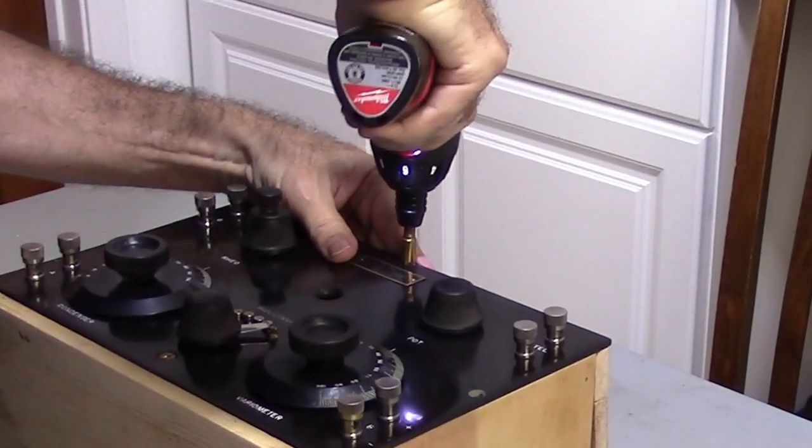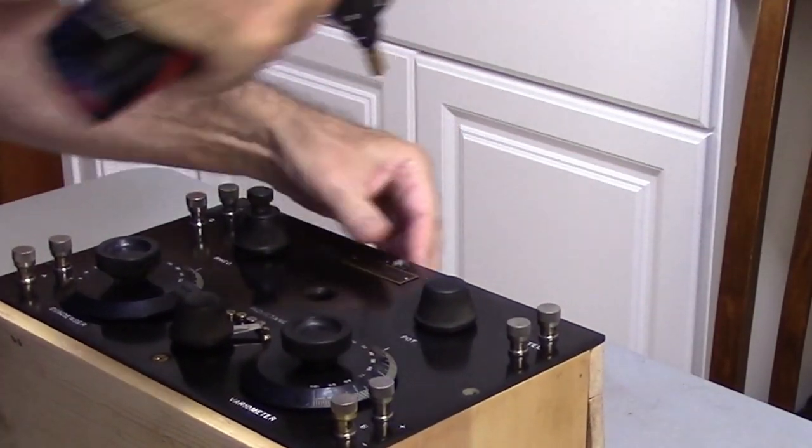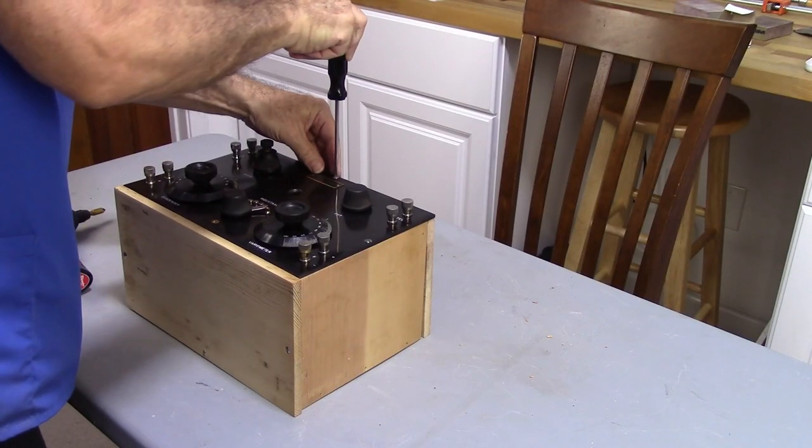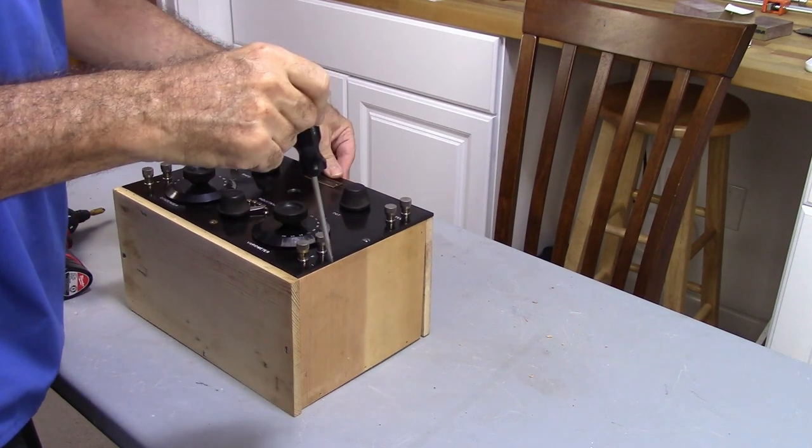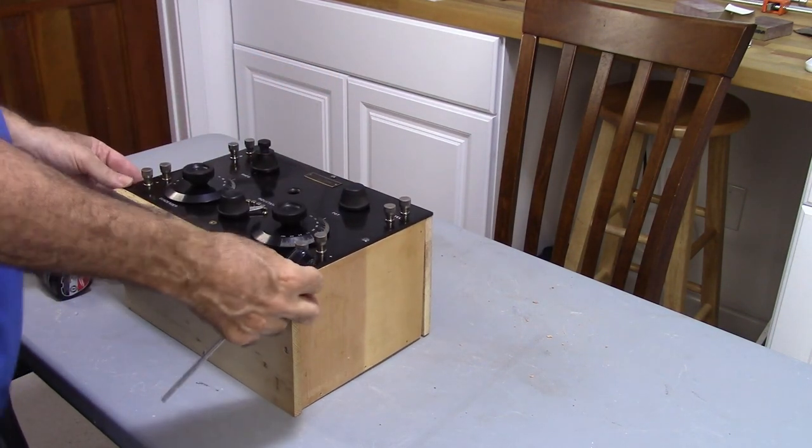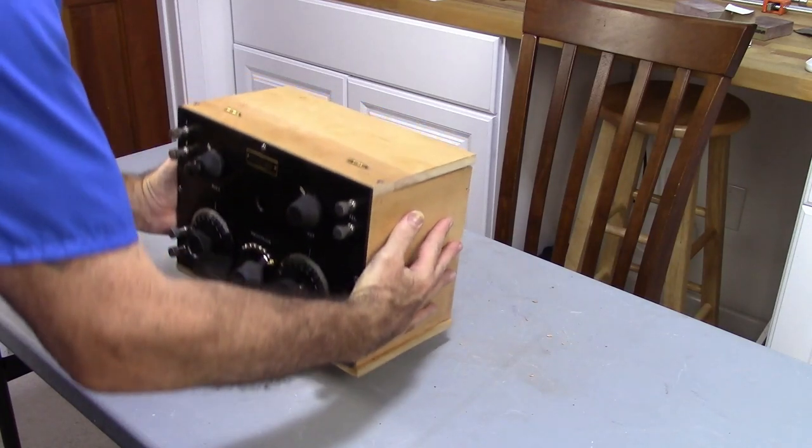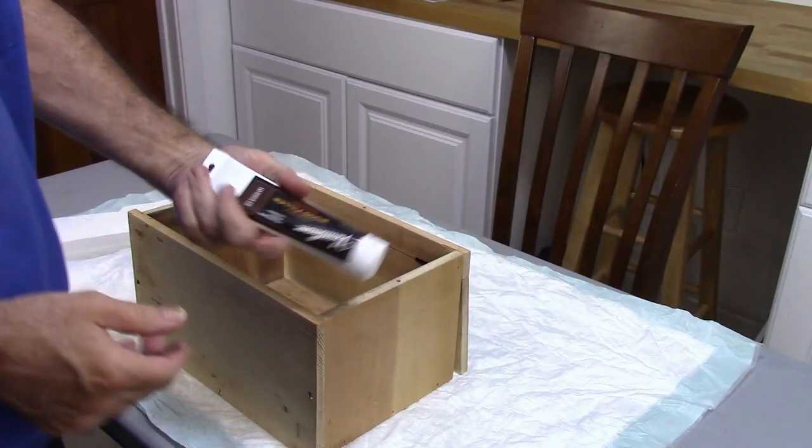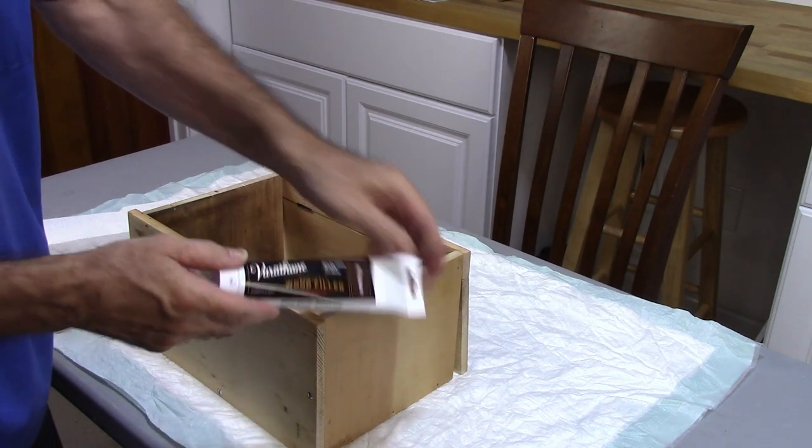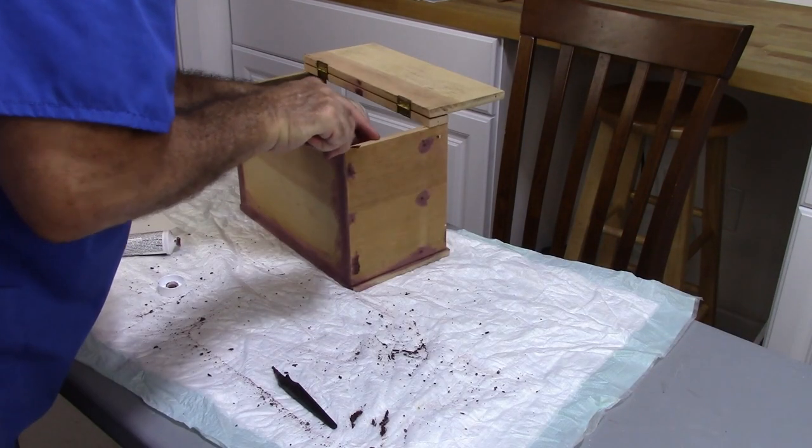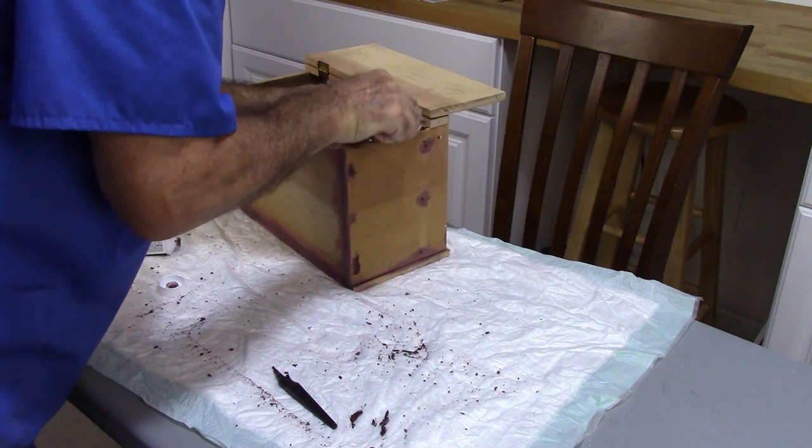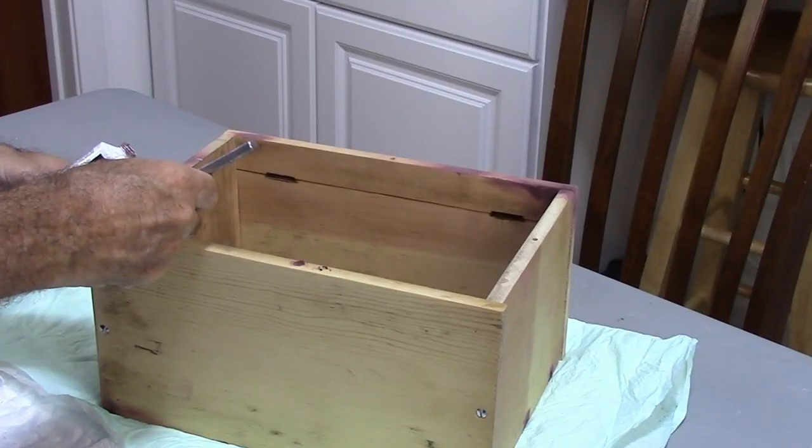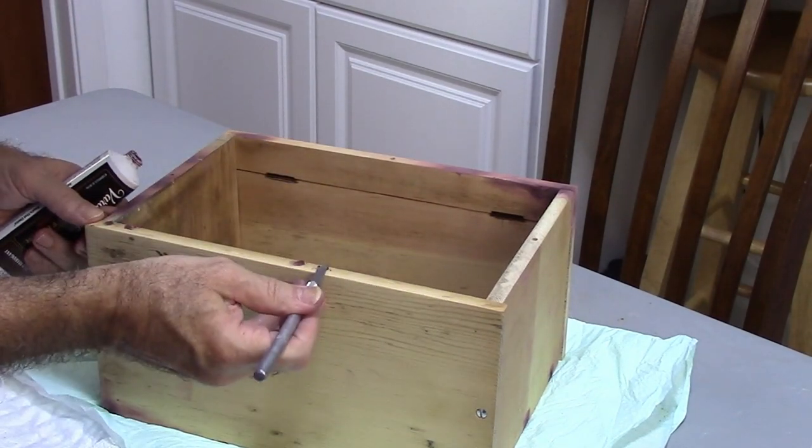I'm just going deep enough to get through the panel. I don't want to go into the wood. Again, using a countersink to allow the screw to go in deeper. Okay, that is it. I've got some sandable wood filler right here. Now most of this is going to get sanded off when I actually do the sanding. It's just trying to fill every little hole that I can find.